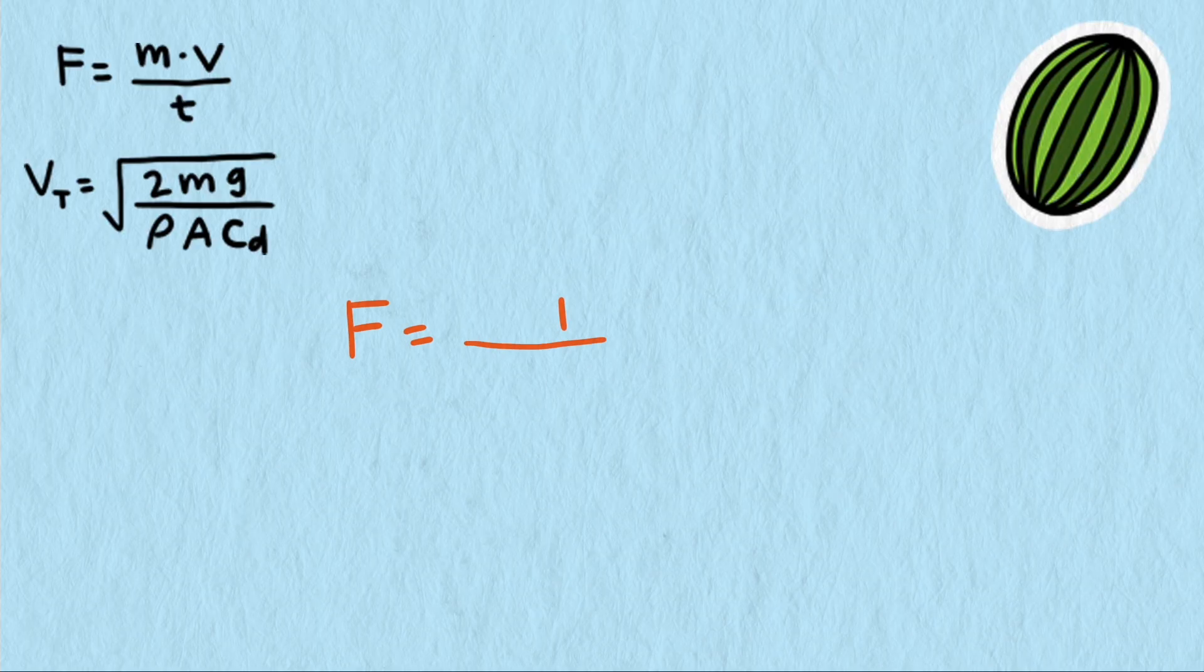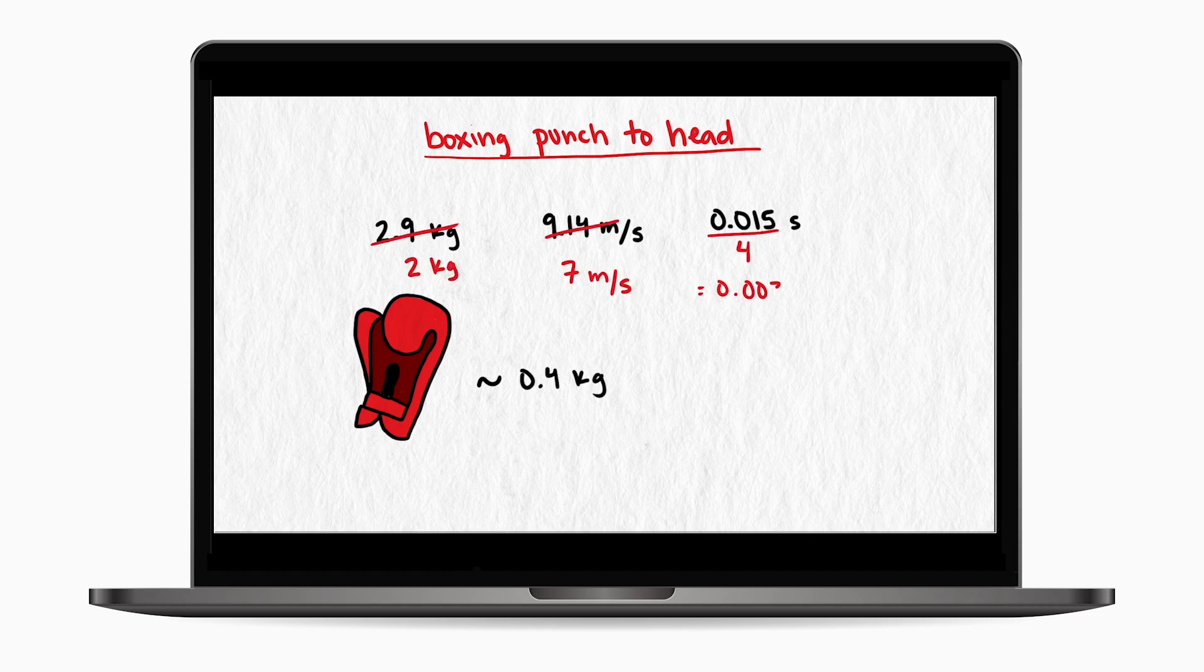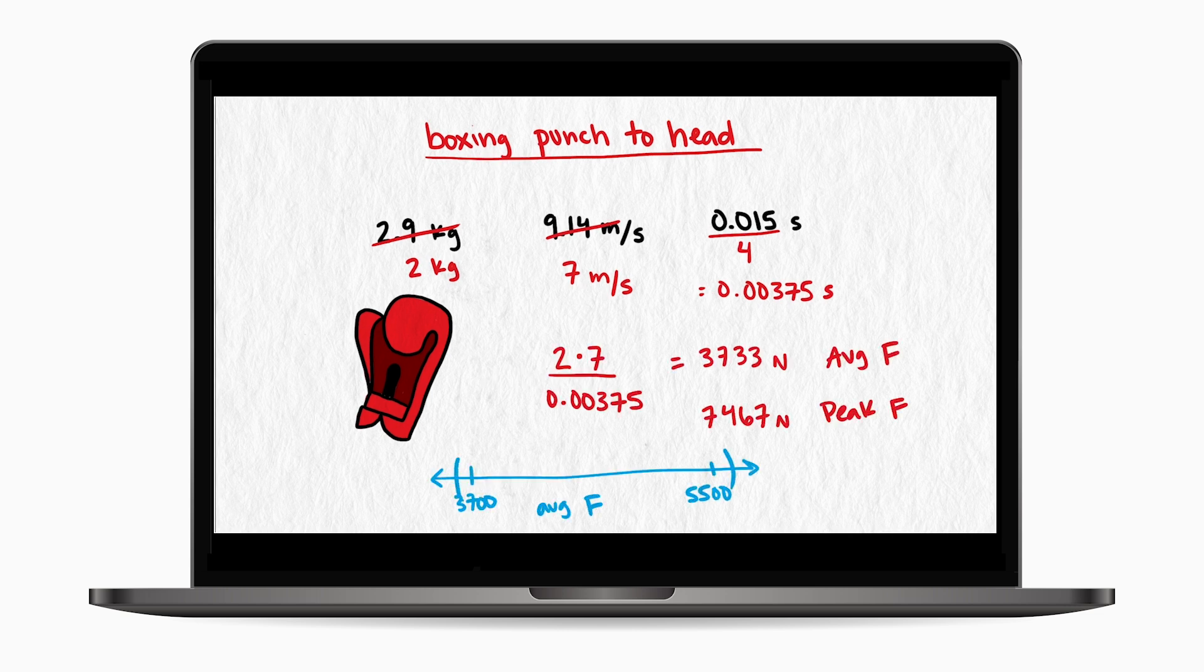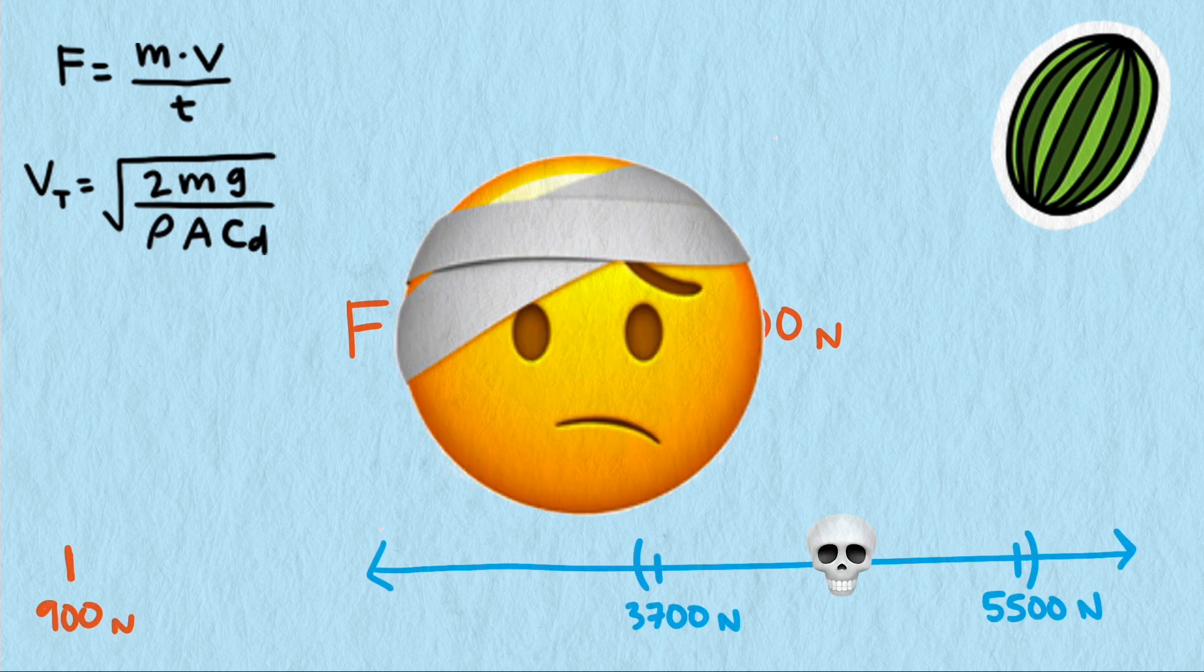Putting this all together, we get an impact force of just 900 newtons. In a previous video, we estimated that about 3,700 to 5,500 newtons of blunt impact force was needed to potentially cause death. So this is not within our range for death, but probably a good concussion, which is really all she walked away with.